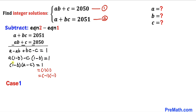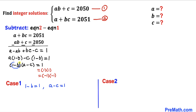So for the first scenario, Case 1: (1 − b) = 1 and (a − c) = 1. For the second scenario, Case 2: (1 − b) = −1 and (a − c) = −1.